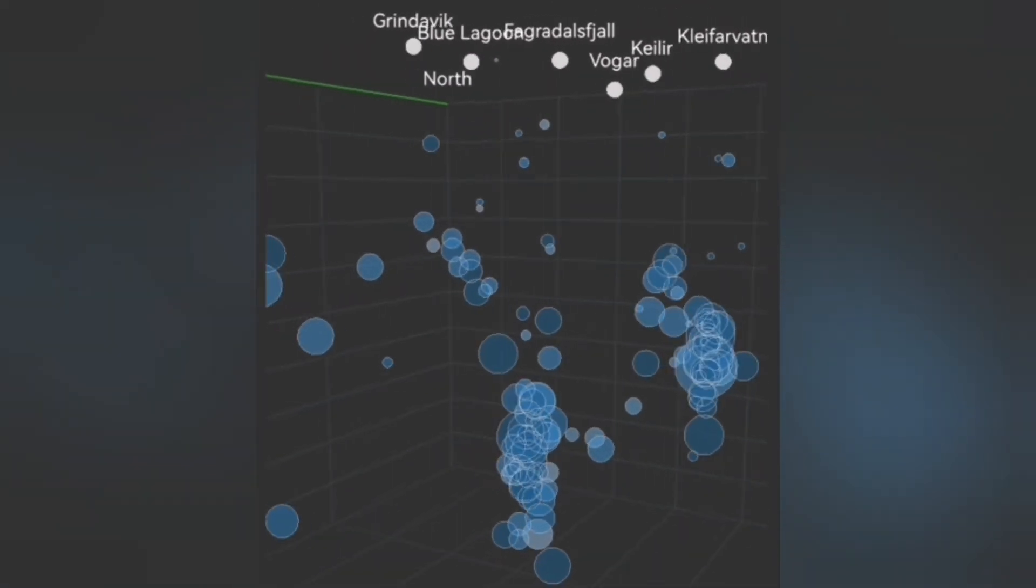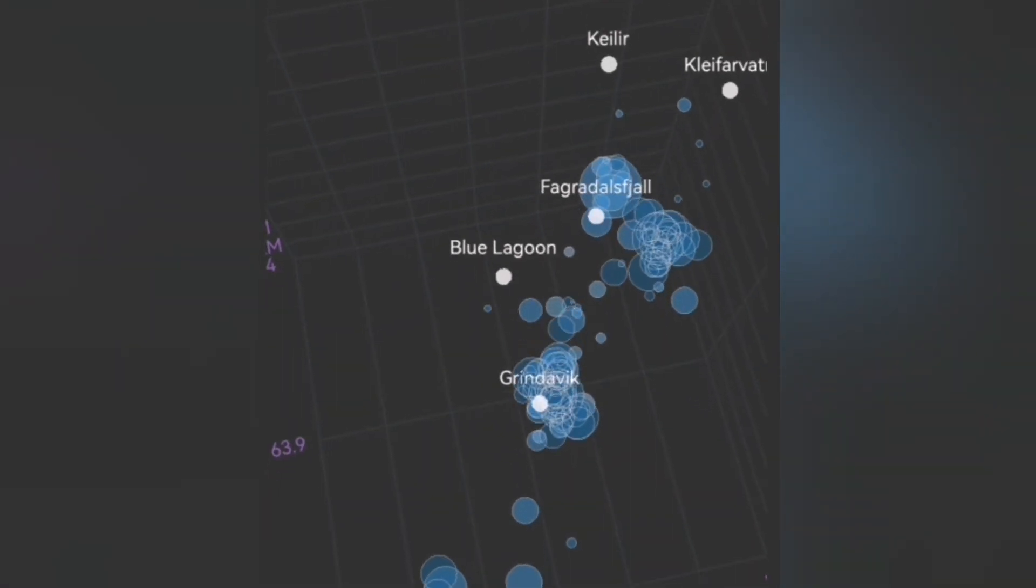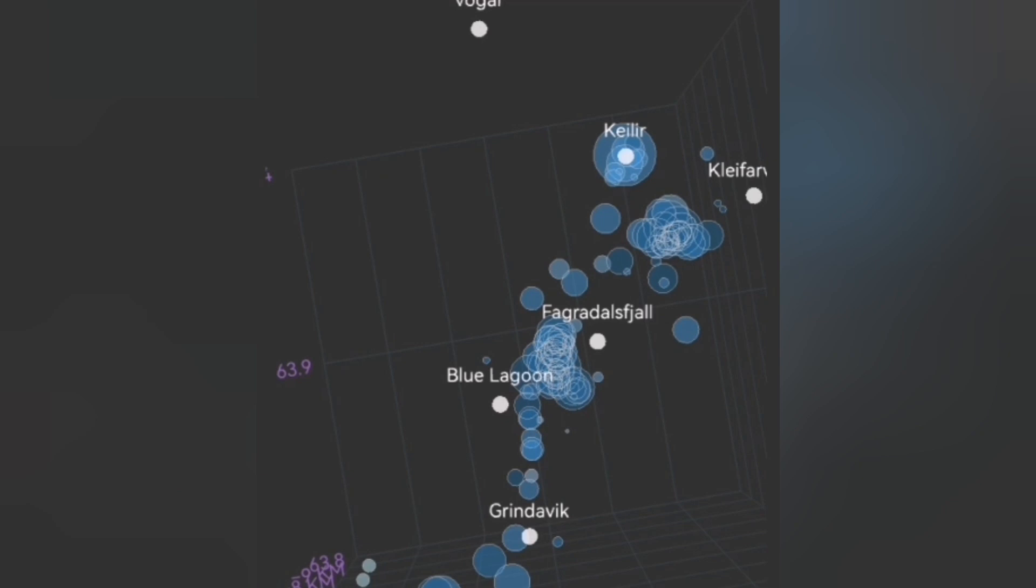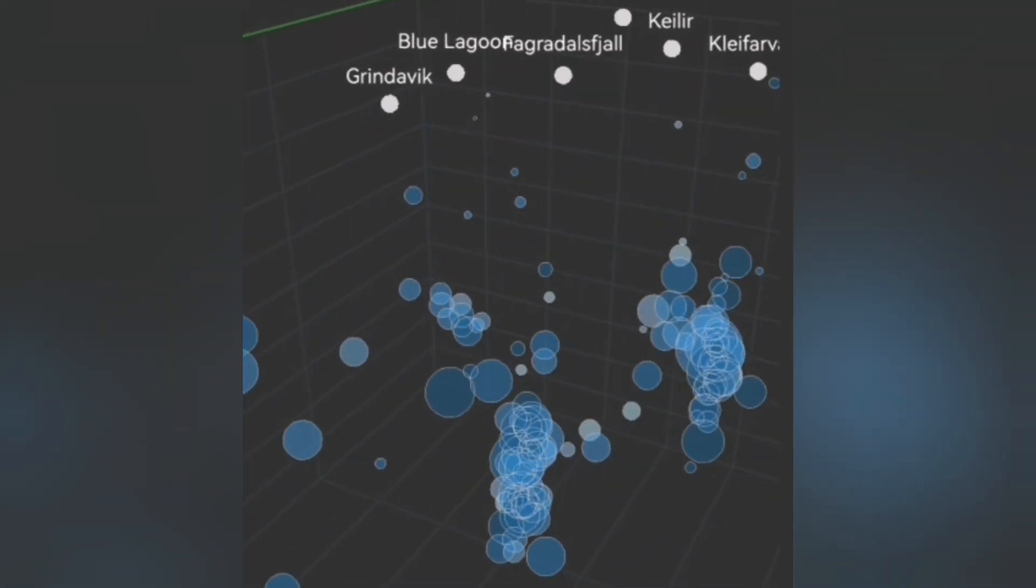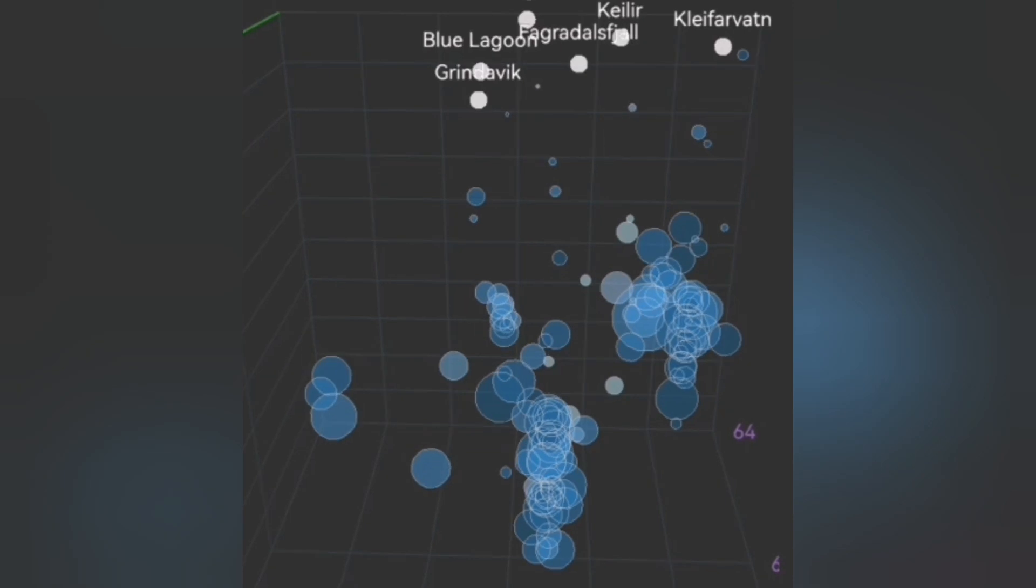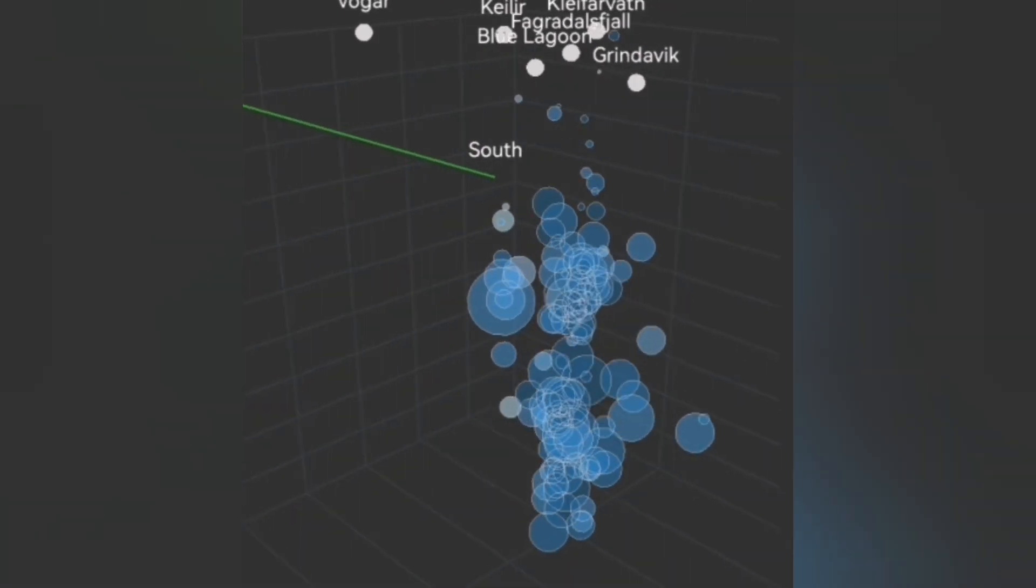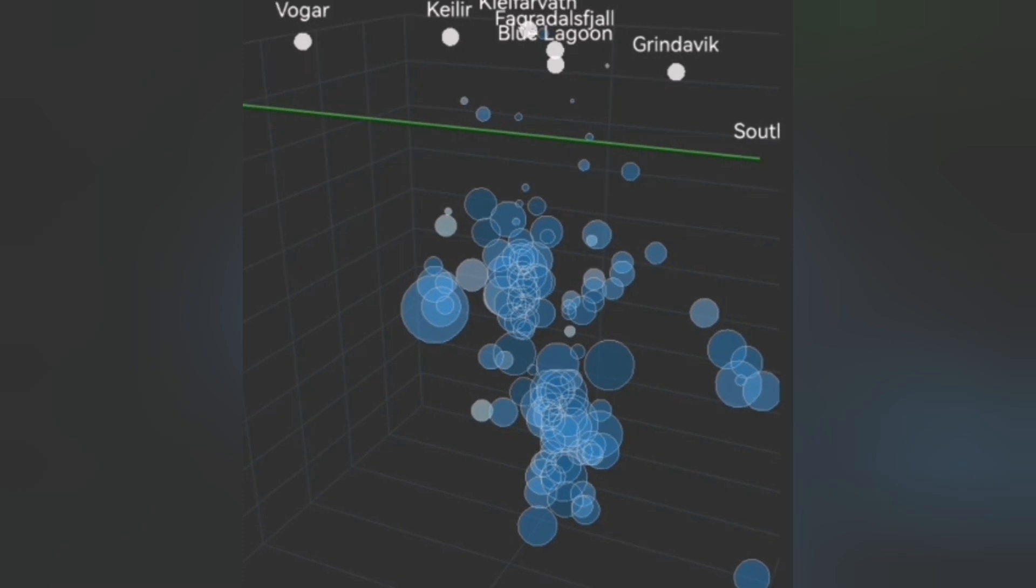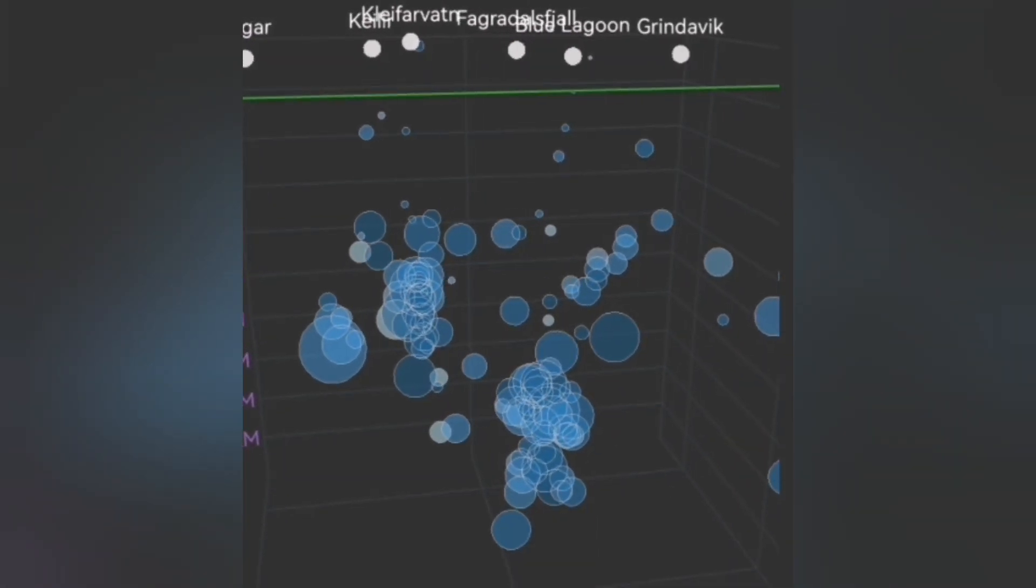You can see at the center the vertical beam of circles rising to the sky. From above, you can see that it is moving toward Grindavik. The same beam of circles is what we can call as a dike moving upward and then through a transgressive sill moving toward Grindavik.